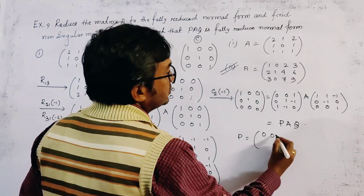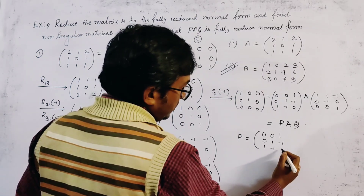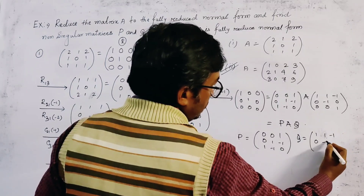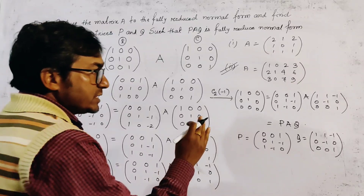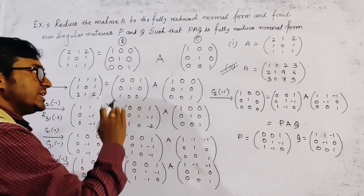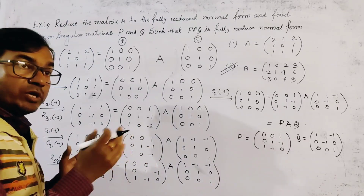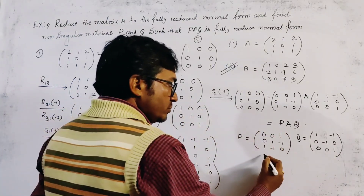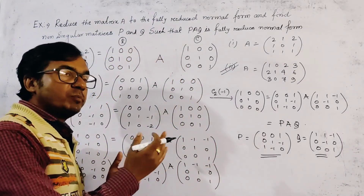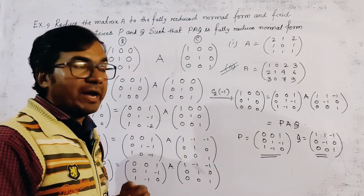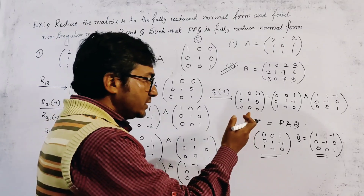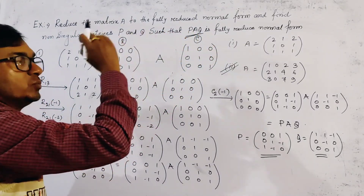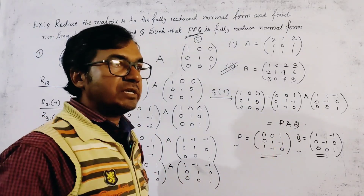Hence, P is given by [0,0,1; 0,1,-1; 1,-1,0] and Q is given by [1,1,-1; 0,-1,0; 0,0,1]. This is the fully reduced normal form PAQ. Note that if we change the order of row and column operations, we may get different P and Q, so this problem has many answers, though all are valid. This special method finds the non-singular matrices P and Q such that PAQ equals the fully reduced normal form of A. Both P and Q are non-singular matrices.